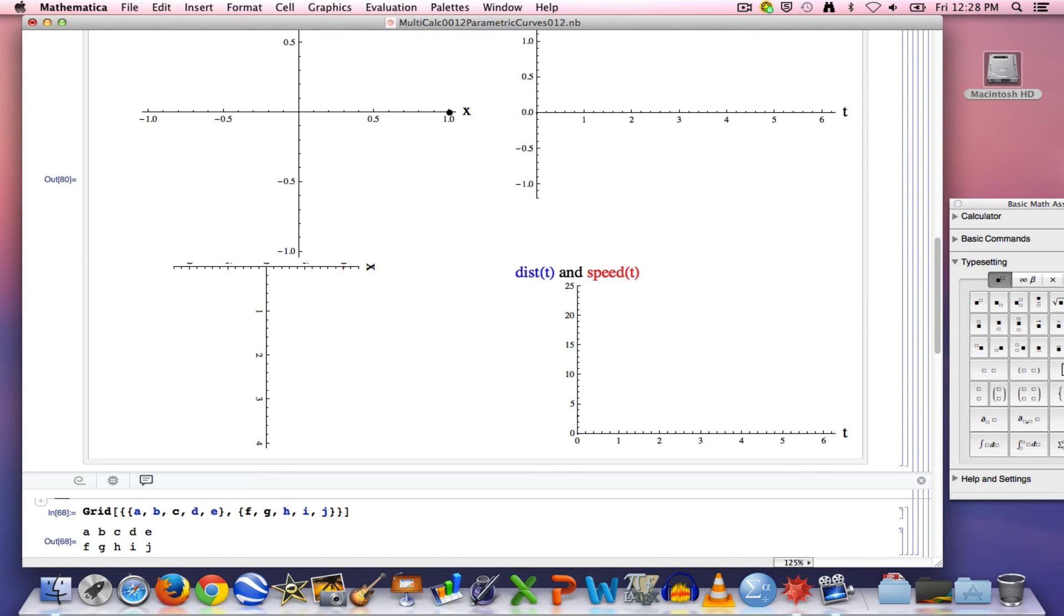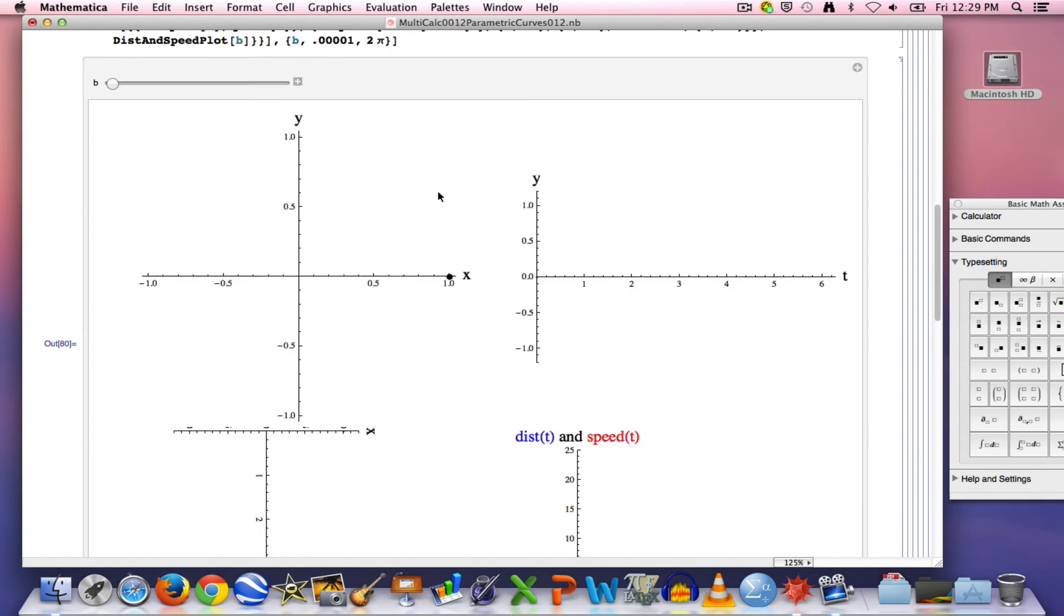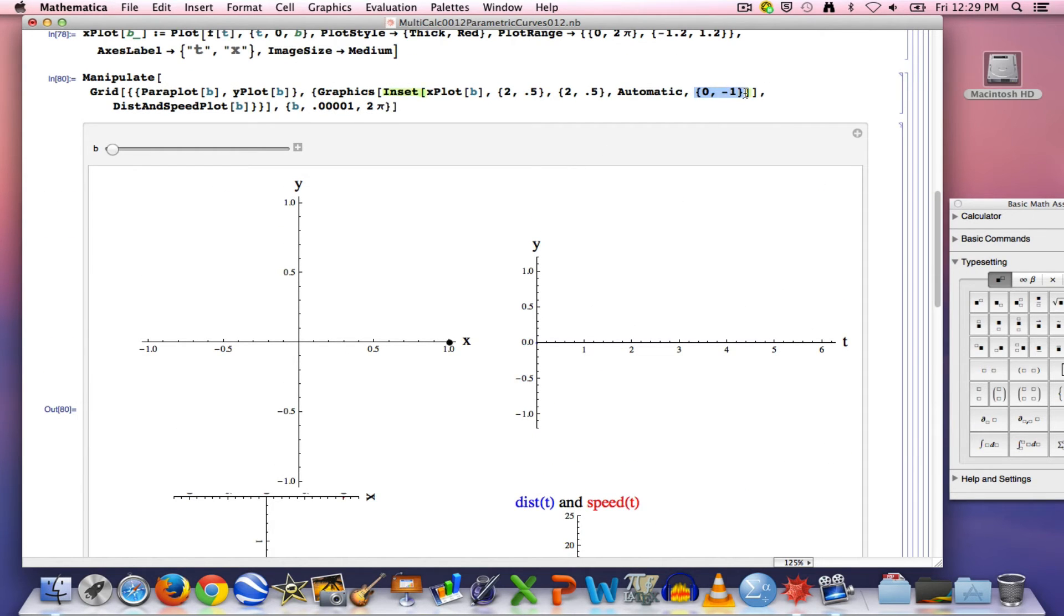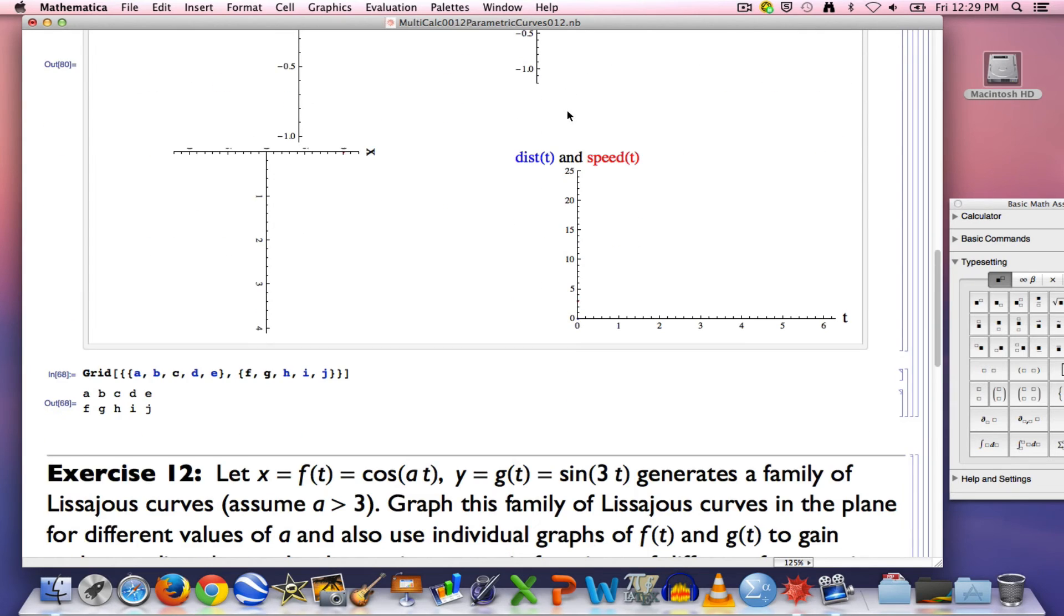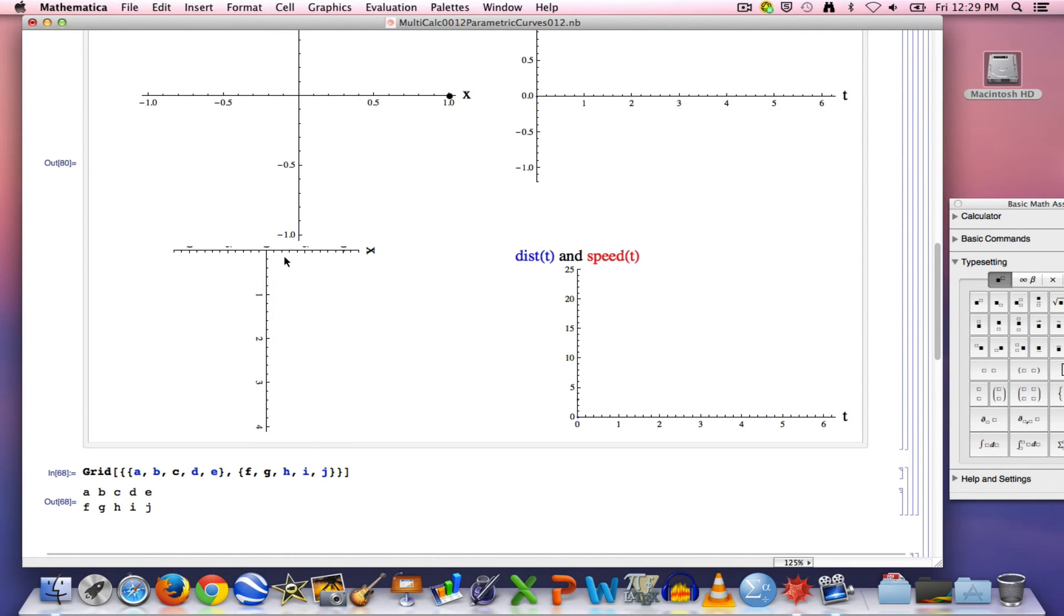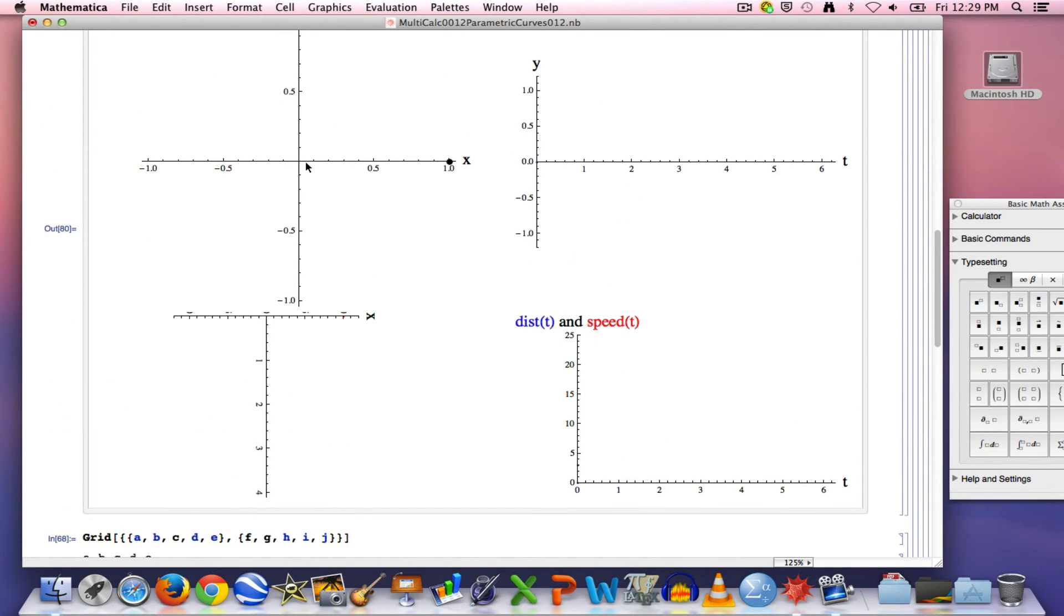What happened? It took the graph of x as a function of t and it turned it sideways at a 90 degree angle. I do know that it is the 0 negative 1 that does that rotation at a 90 degree angle clockwise.